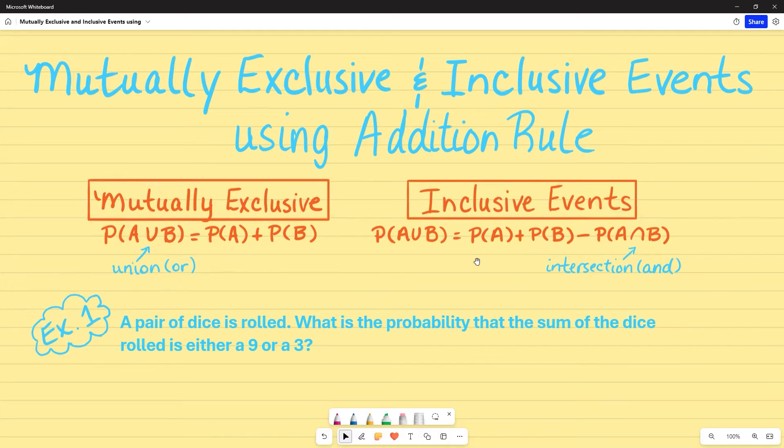For inclusive events, it's just an altered version of the addition rule where you still have the probability of A plus the probability of B. However, you're now going to subtract where they intersect. So that's what this symbol is, intersection. And in a word problem, you will see the word and.